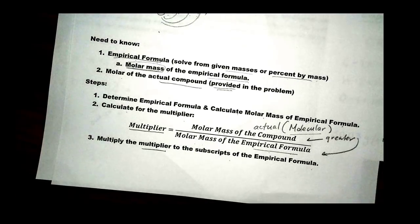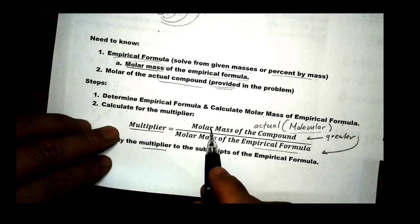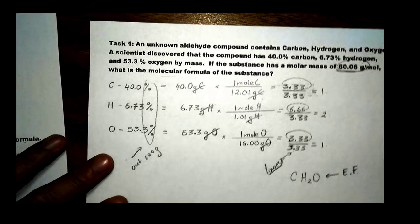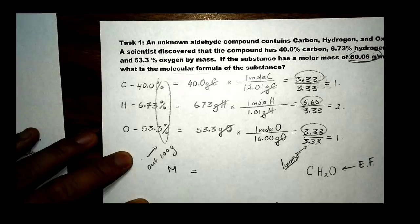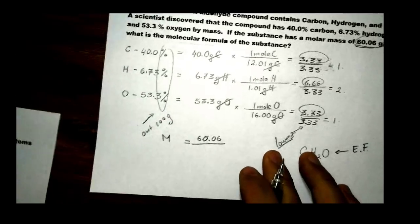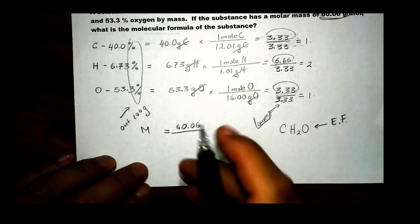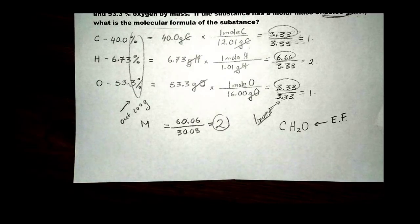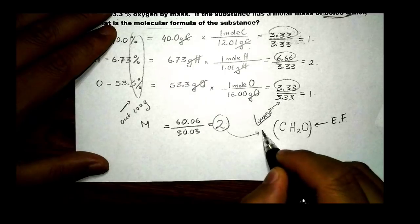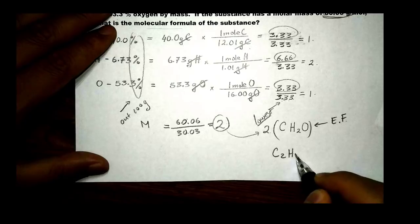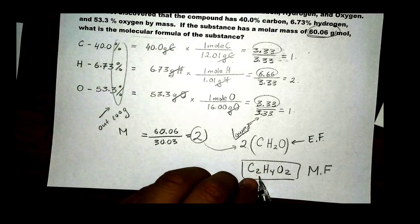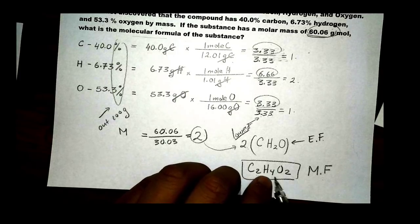Next, we calculate the multiplier. The equation is: multiplier M = molar mass of the compound ÷ molar mass of the empirical formula. So M = 60.06 ÷ 30.03 = 2. We multiply this multiplier by all the subscripts of the empirical formula: 2 carbon, 4 hydrogen, and 2 oxygen. This is our molecular formula, C₂H₄O₂, giving the exact whole number ratios of 2 carbon, 4 hydrogen, and 2 oxygen.